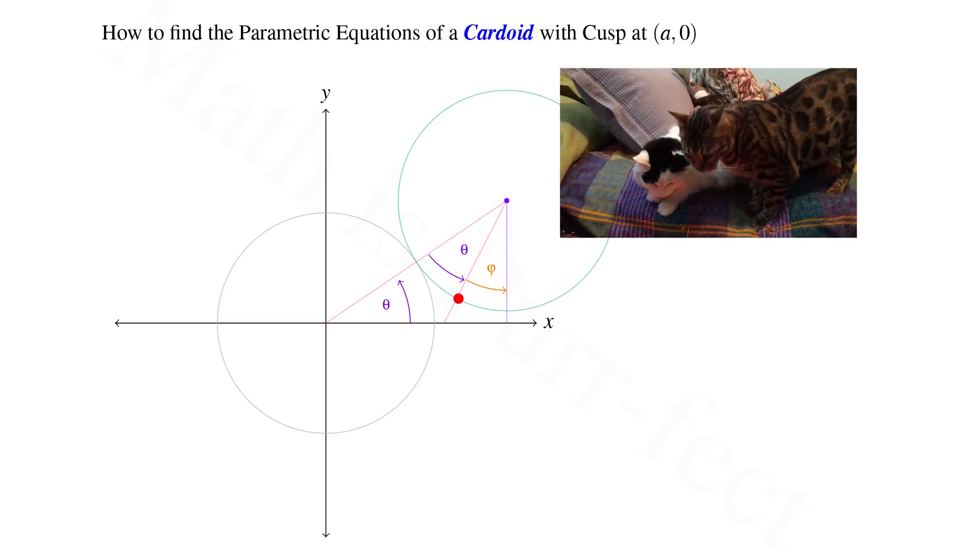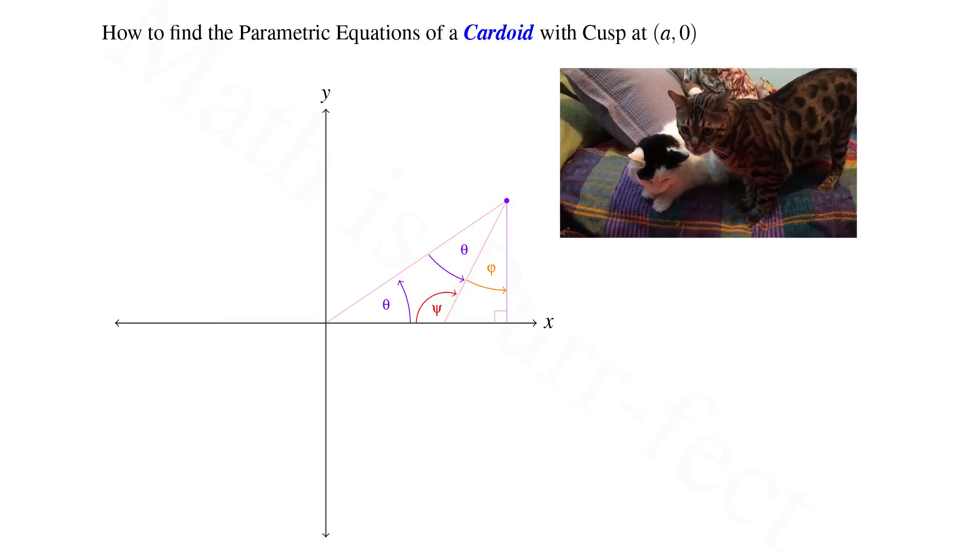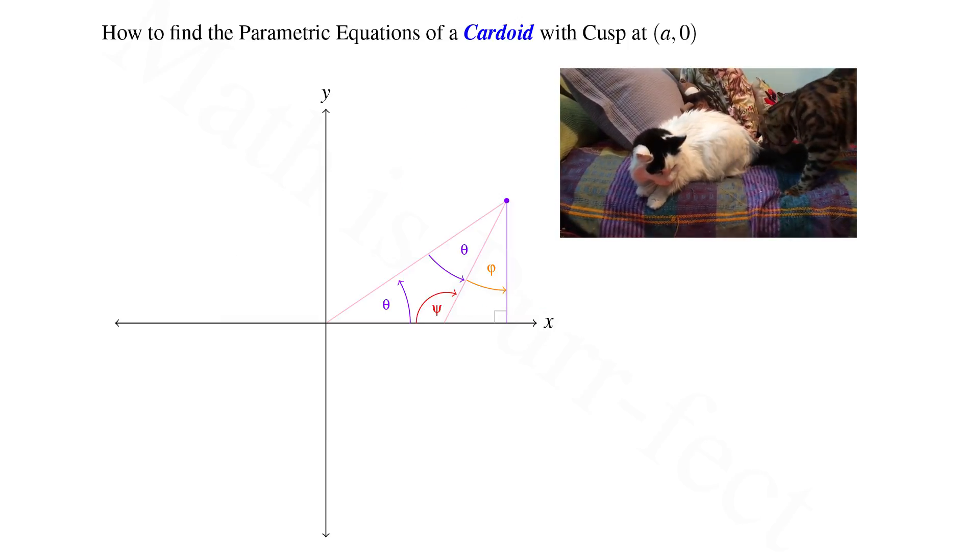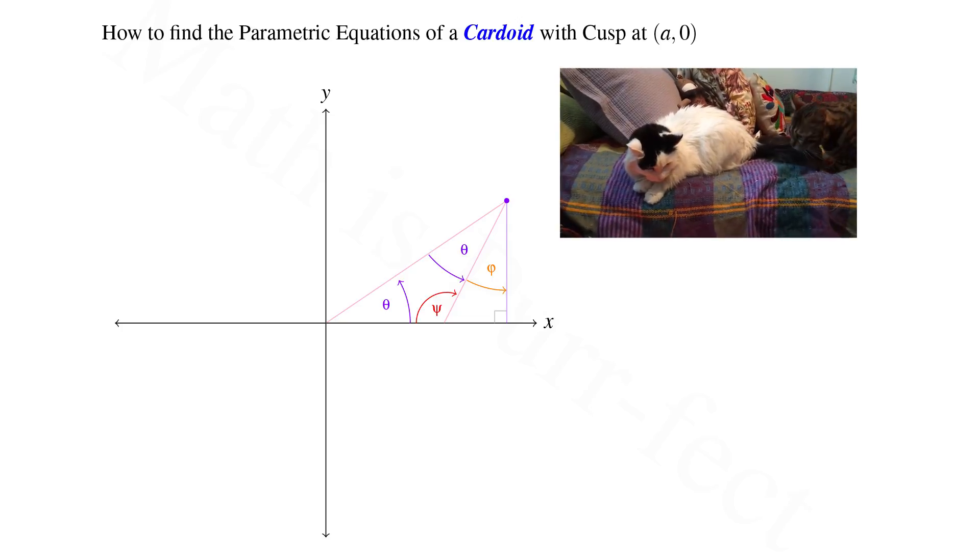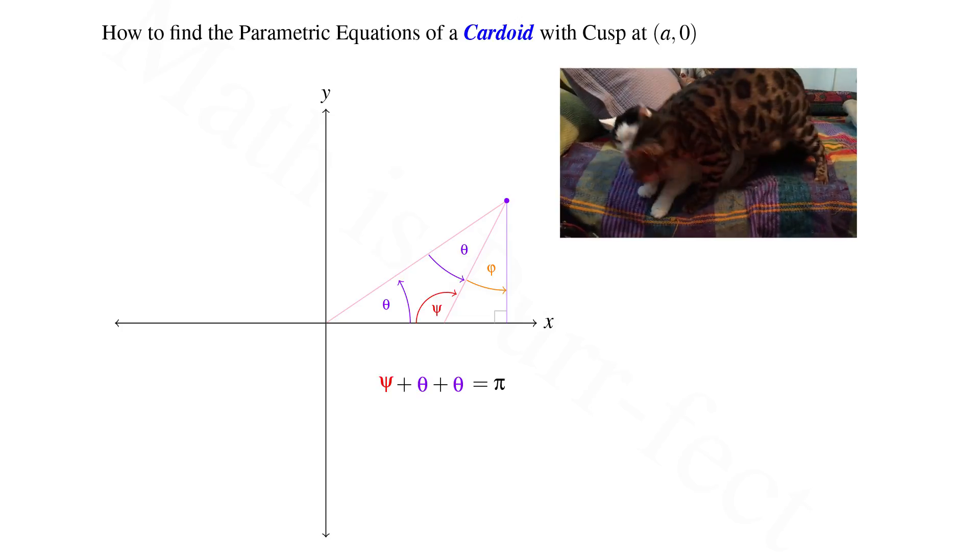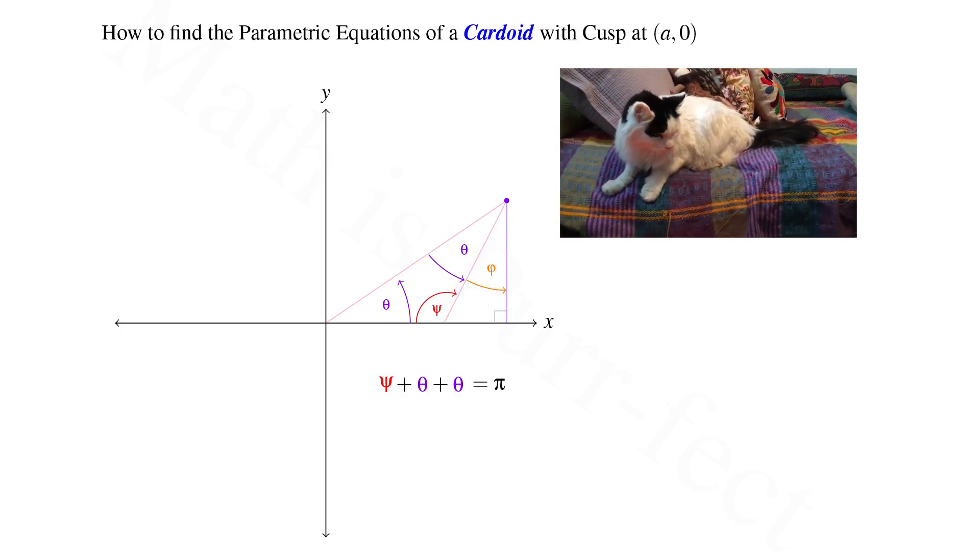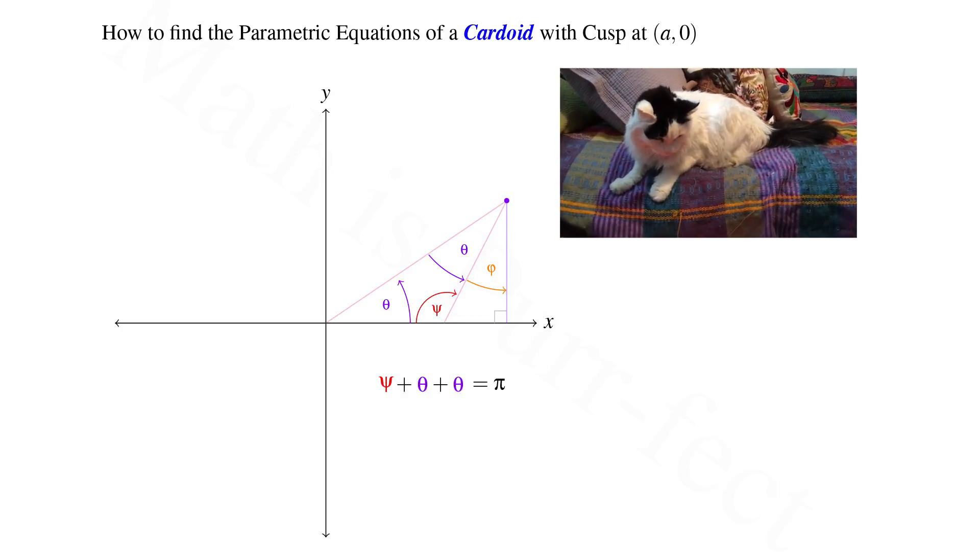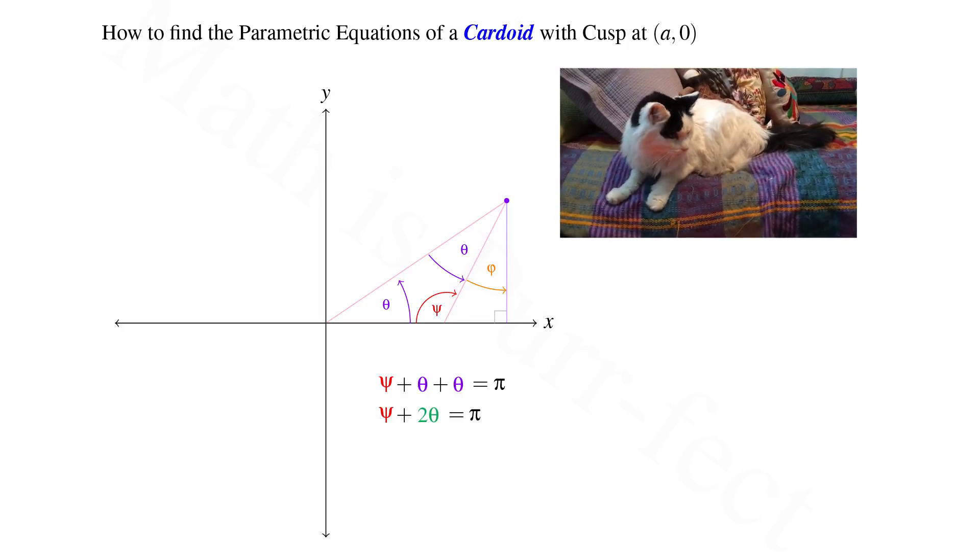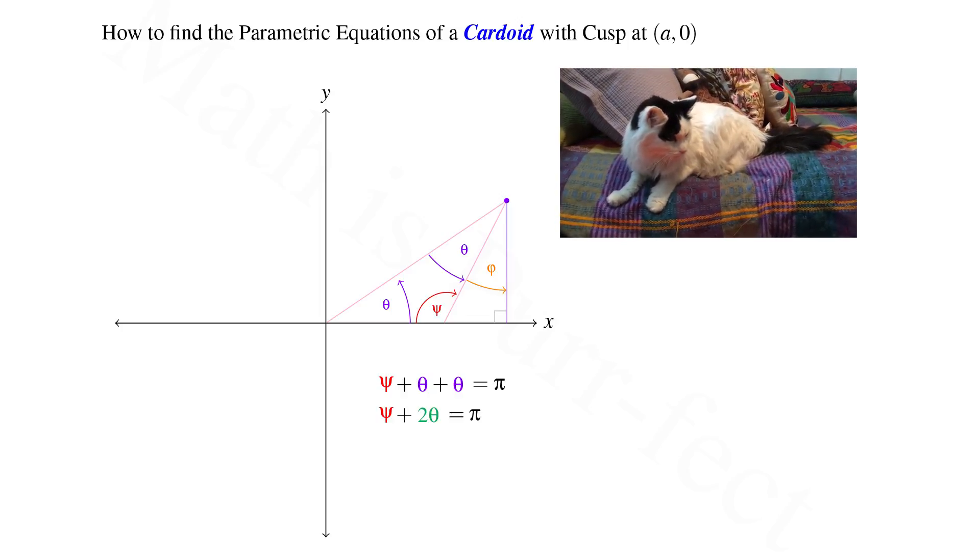Returning to our isosceles triangle, let's call the remaining angle psi. We know that in a plane, the sum of the interior angles of a triangle is pi radians. Hence, psi plus theta plus theta is pi. That is, psi plus 2 theta is pi.